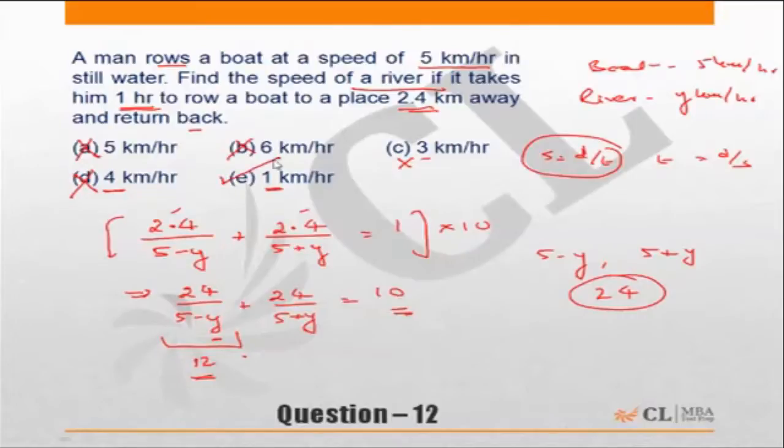Correct answer should be choice E. You can substitute and check out also: 24 upon 4 plus 24 upon 6. 24 upon 4 is equal to 6, plus 24 upon 6 is 4, equals 10. Correct answer choice E.